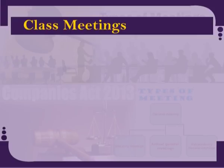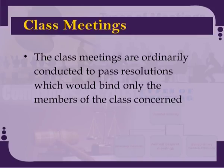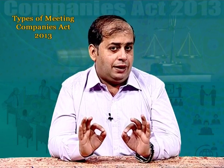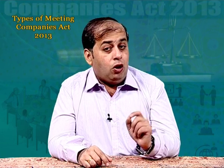Let us now discuss class meetings. Class meetings are ordinarily conducted to pass resolutions which would bind only the members of the class concerned. Such meetings will be attended by only the members of that particular class, for example members of preference shareholders. A company calls such meetings when it is proposed to vary the rights of a particular class of shares and it is not possible to get the consent in writing of three-fourths of the issued shares of that class. The resolutions to be passed in this meeting must be passed as special resolutions only. In case of any class of shareholders where curtailment of rights is to take place, the consent of such class or classes is necessary.